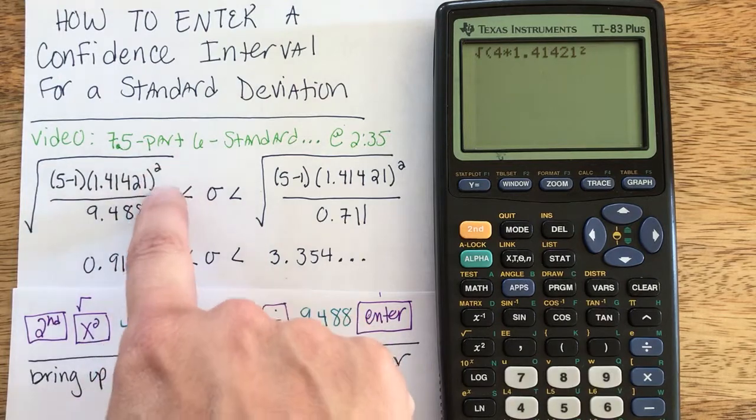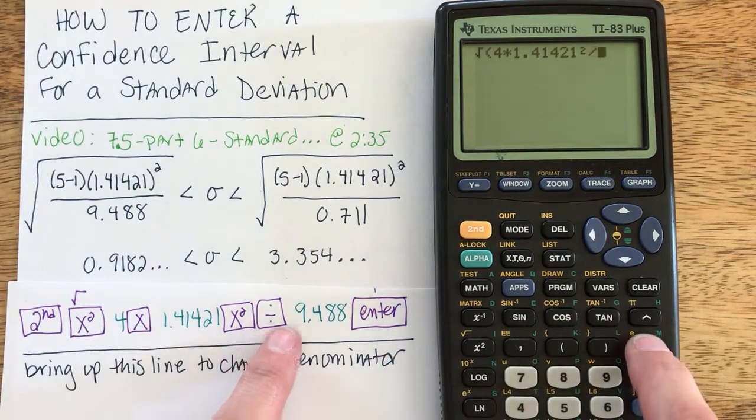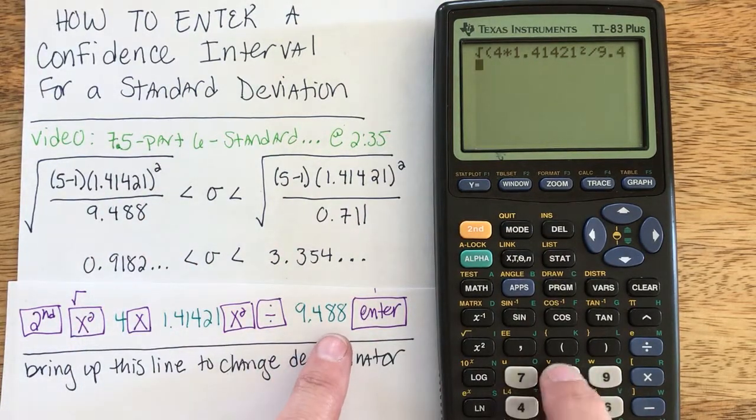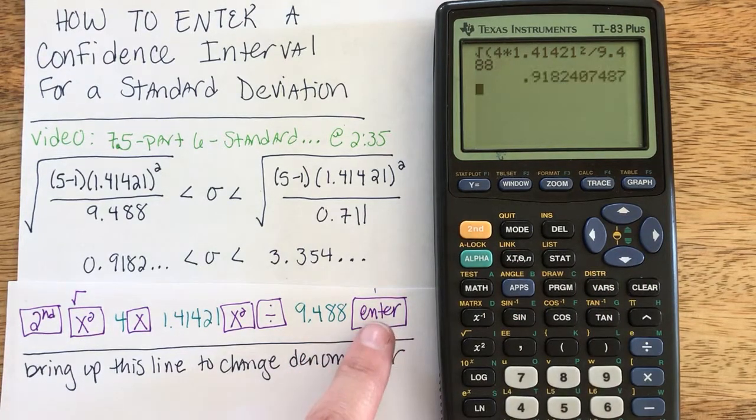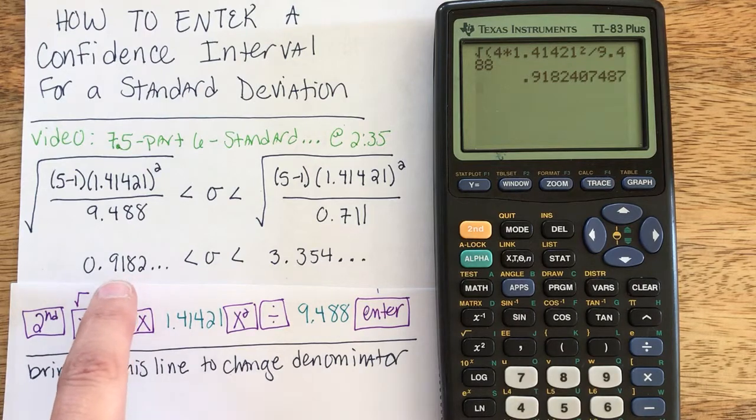So now that I've finished the numerator, I'm ready to divide by the denominator. I choose the division symbol, type my denominator of 9.488. No parentheses. I can just hit the enter button and I get my lower bound of 0.918.